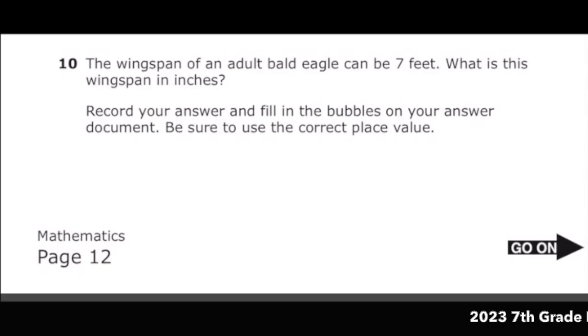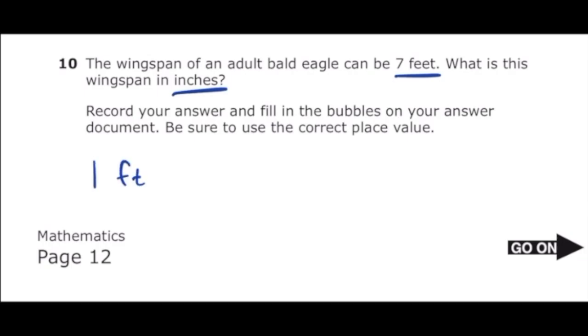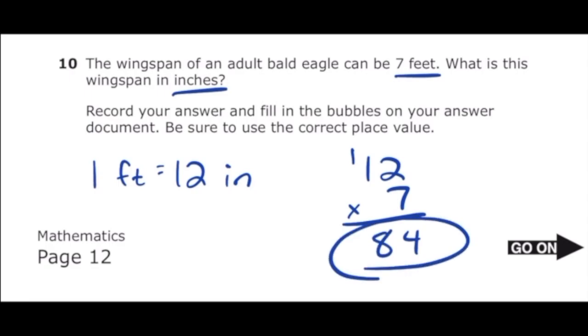This is number 10 from the 2022 6th grade math STAR test. The wingspan of an adult bald eagle can be 7 feet. What is this wingspan in inches? We know that in 1 foot, we have 12 inches. So all we have to do is just multiply 12 by 7 to get our answer. We're going to do 7 times 2, which is 14. I'm going to carry my 1. 7 times 1 is 7, plus 1 is 8. So our answer is 84.